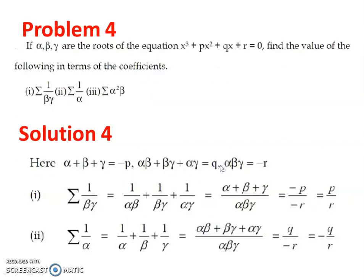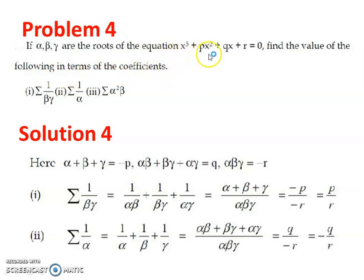Now let us discuss some problems related to symmetric functions. If alpha, beta, gamma are the roots of the equation x³ + px² + qx + r = 0, find the values of the following in terms of the coefficients — where the coefficients are 1, p, q, and r. We have to find: sigma(1/βγ), sigma(1/α), and sigma(α²β).